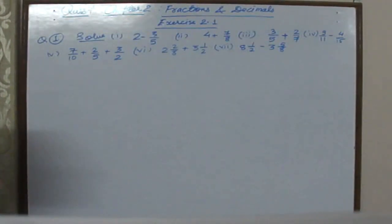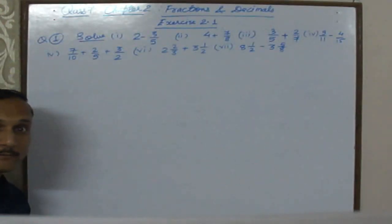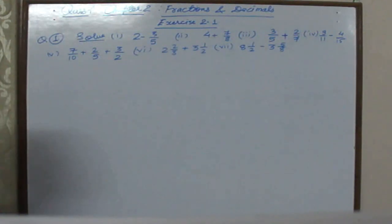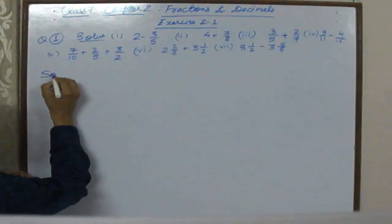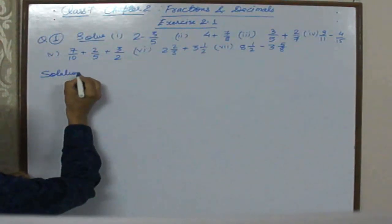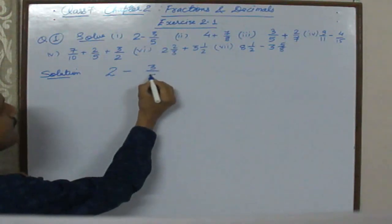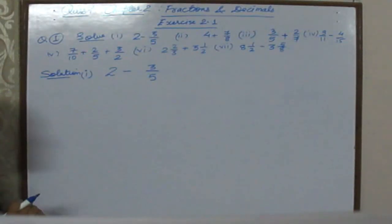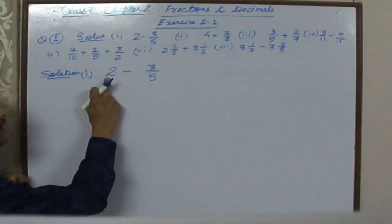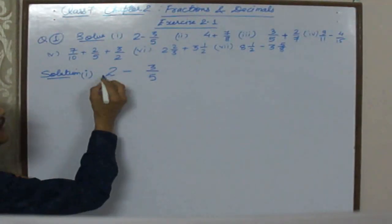Now let us solve Exercise 2.1. Question number 1, first part: 2 minus 3 by 5. Here 2 is a whole number and 3 by 5 is a fraction. We have to convert 2 into an improper fraction by keeping denominator 1, giving us 2 by 1.